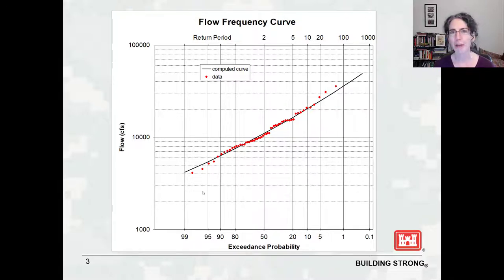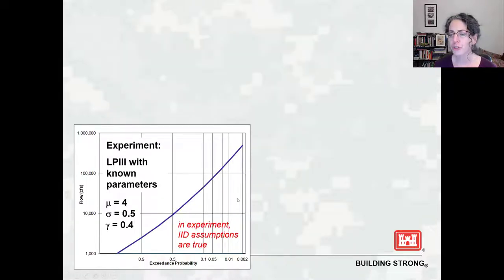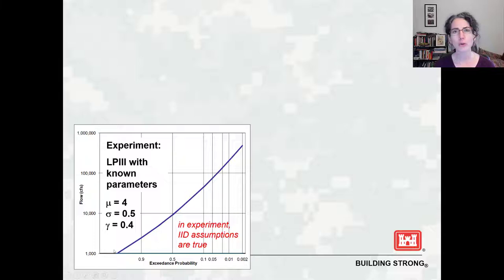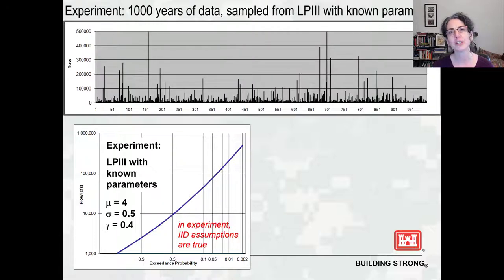So what I'd like to do is just wreck that good feeling. I want you to feel uncertain about this, and I'll show you why. We're going to do a statistical experiment — a Monte Carlo simulation, a bit like having Excel roll six-sided dice. I'm going to sample data from a known probability distribution and then try to re-estimate that probability distribution. Here's a known flow frequency curve: a log Pearson type 3 with specific parameters shown in blue. From this known probability distribution, I'm going to take a thousand random values and produce 1,000 years of annual peak flow — data drawn right from this probability distribution.